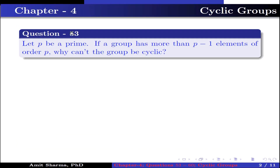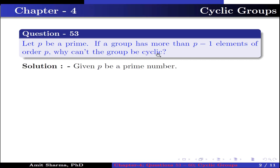Question number 53. Let P be a prime. If a group has more than P-1 elements of order P, why can't the group be cyclic? Given P is a prime number, let G be a group.